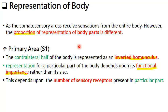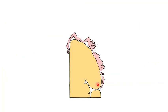The representation of the body — in these areas, the somatosensory cortex receives sensation from the entire body. However, the proportion of this representation is different. It is represented as an inverted homunculus. The representation for a particular part of the body depends upon its functional importance, which depends upon the number of sensory receptors in that part — not upon the size of the body part.